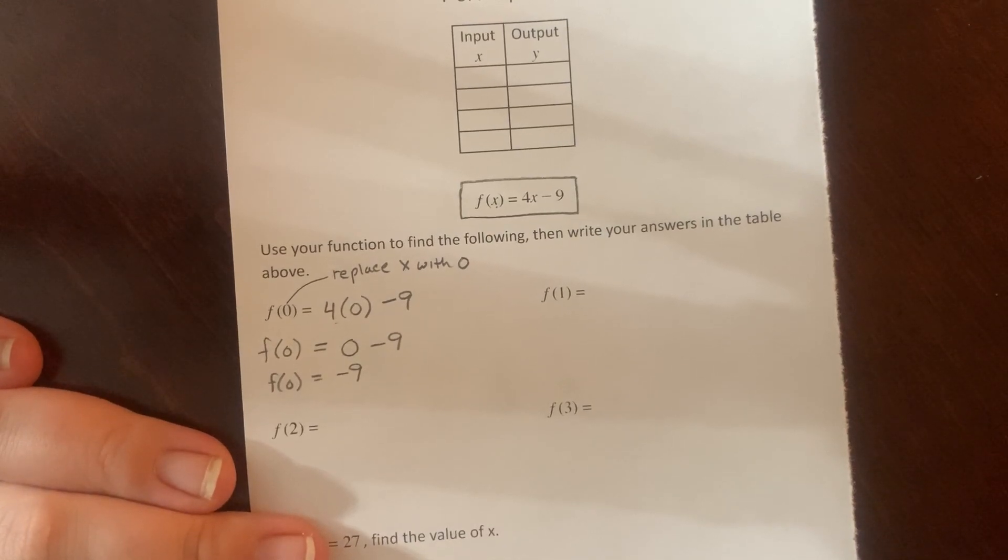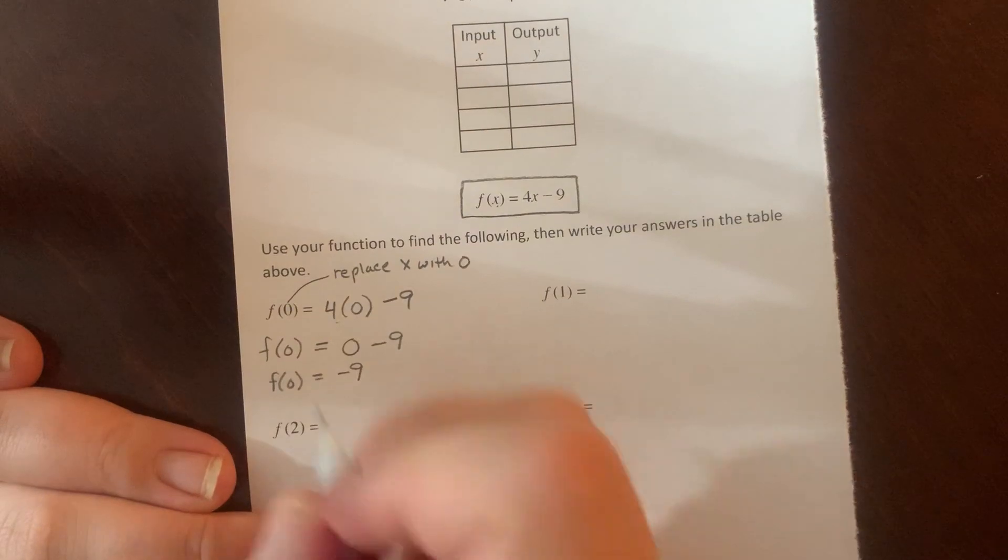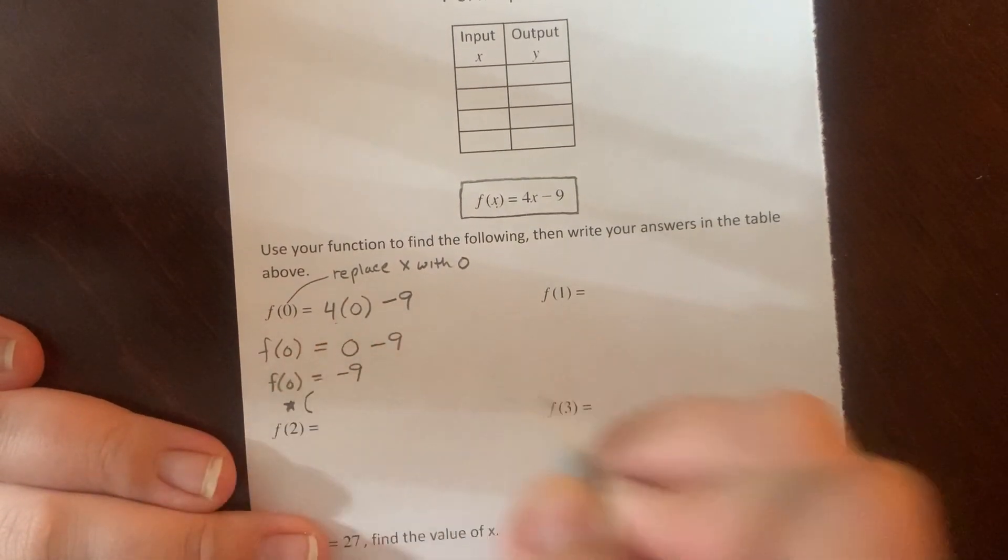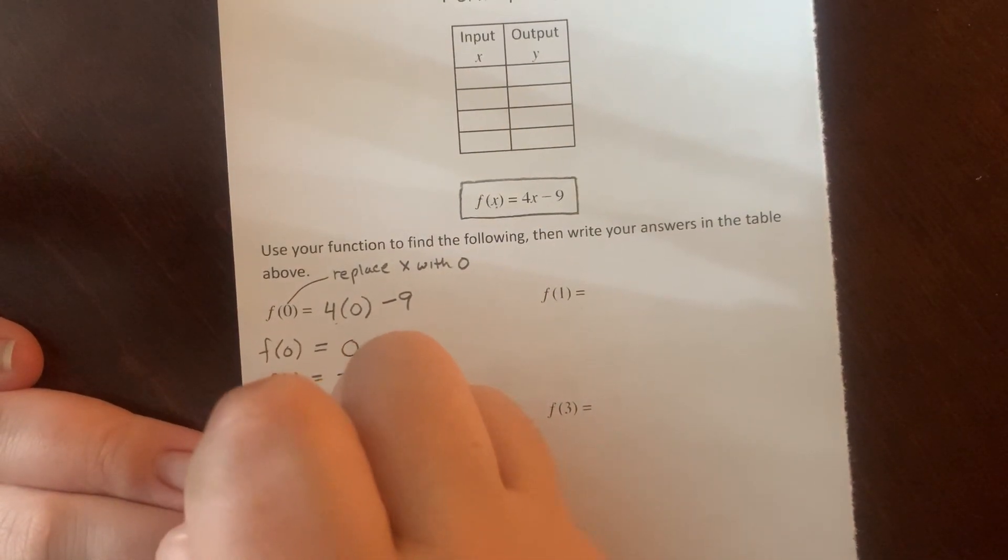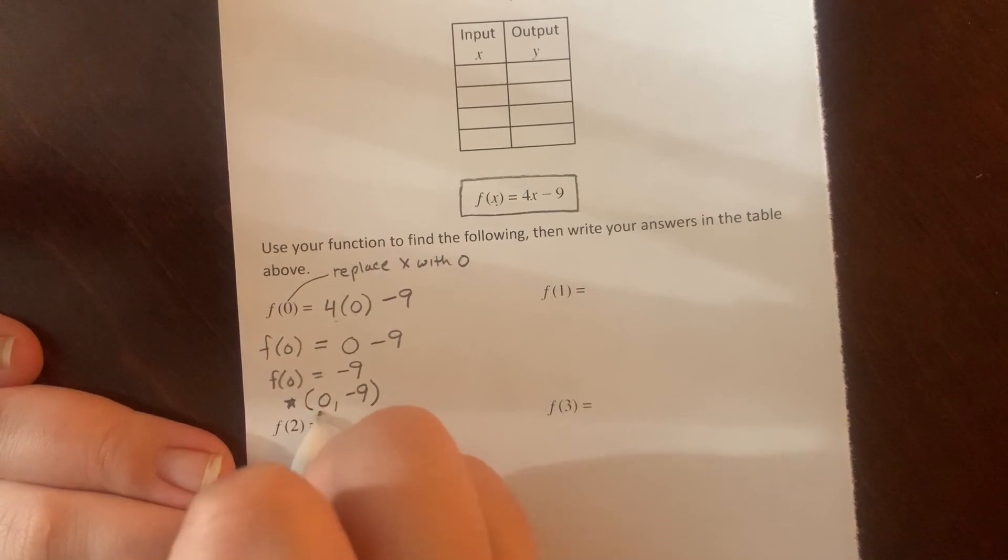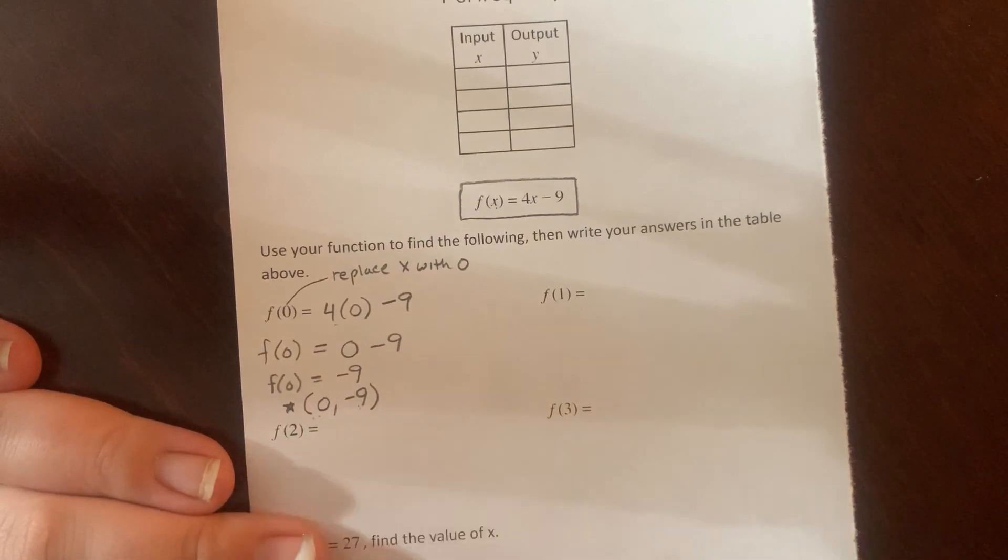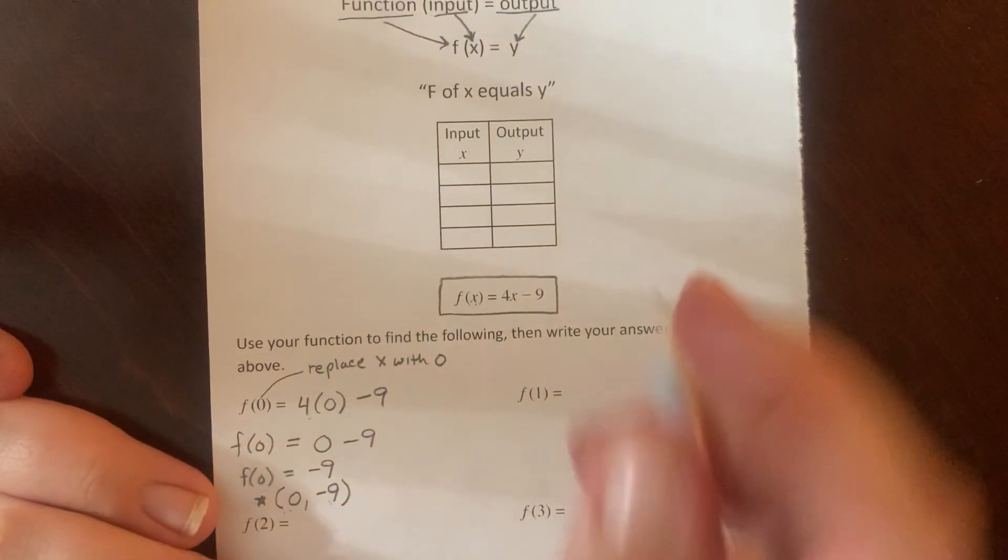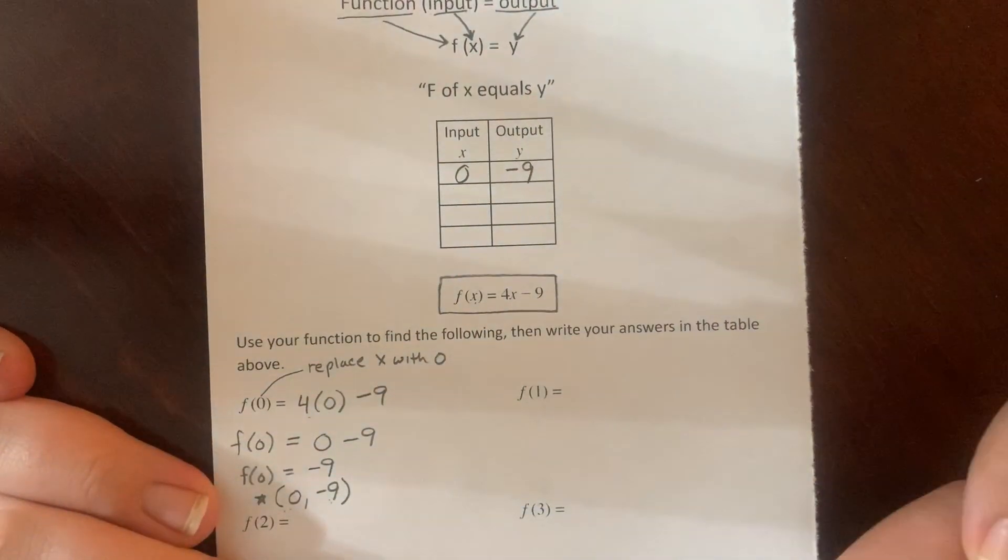Now that's going to tell me a pair of inputs and outputs that go together based on this function. I'm going to write them as an ordered pair. It doesn't say to do this in the directions, but we're going to write it so we can see one more way of recognizing inputs and outputs. So 0 was my X and negative 9 was my Y. My input was 0. My output was negative 9. I can write it this way in an ordered pair. I can also take that information from that ordered pair, go up to my table, and fill in when X is 0, Y is equal to negative 9.